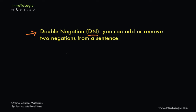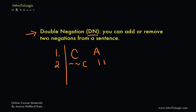For example, imagine we go back to our sentence 'I like cheese,' represented by the letter C. According to double negation, if I have the letter C — or the sentence 'I like cheese' — on one of my lines in an argument, I am allowed to use that line and add or take away two negations. So I can take line one and add two negations to C, giving me not-not-C. I label it as line 1, DN.